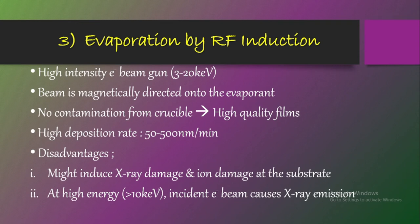There are also some disadvantages of this approach. The process might induce X-ray damage or ion damage at the substrate. At high energies greater than 10 keV, the incident electron beam causes X-ray emission. These are limitations to keep in mind. Additionally, the deposition equipment is more costly compared to the previous two approaches, whereas the first approach — resistive heating — is the simplest and used in laboratory setups.